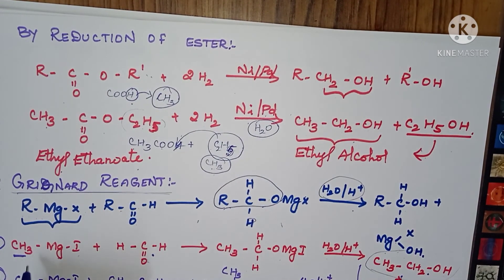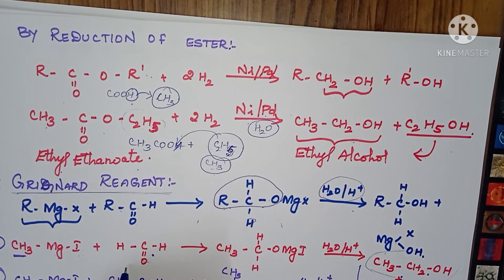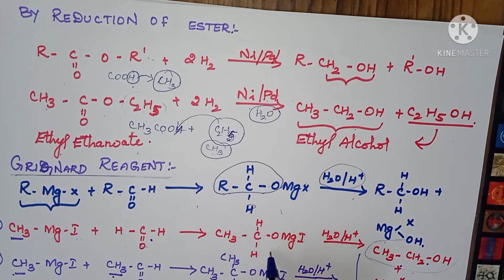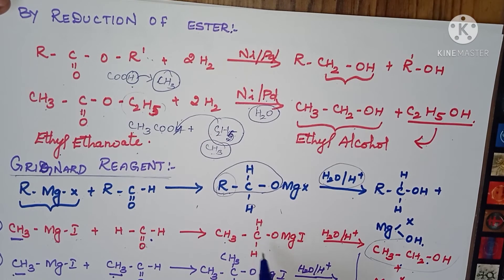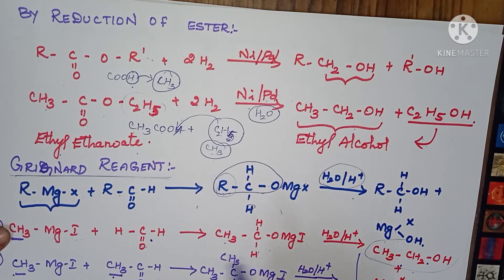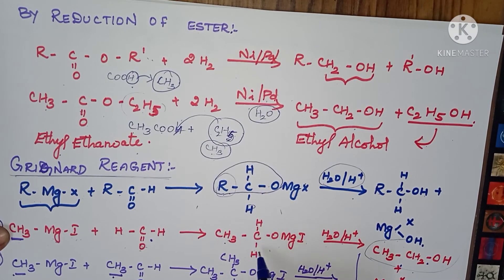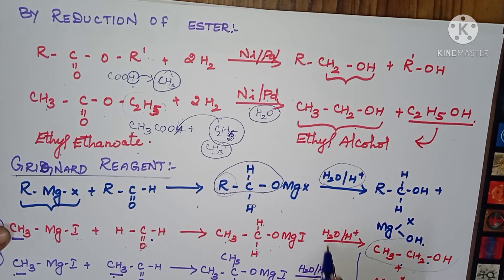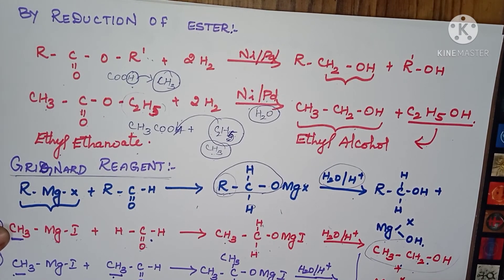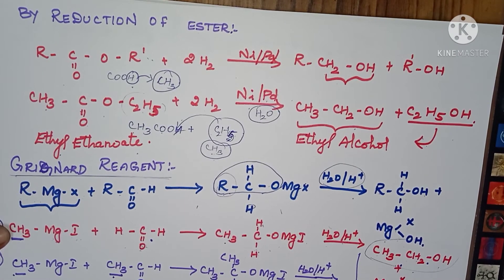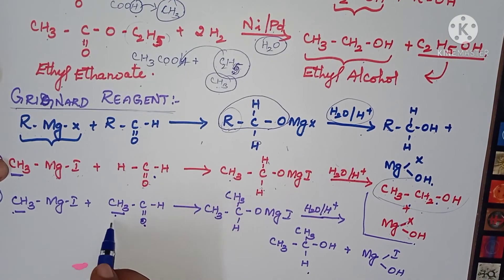For example, CH3MgX — methyl magnesium iodide — combined with formaldehyde HCHO gives an addition product CH3CH2OMgI. Hydrolysis then takes place, giving CH3CH2OH plus MgX-OH. CH2OH makes this a primary alcohol.